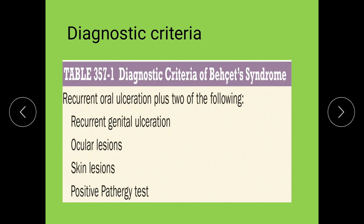The diagnostic criteria require the presence of recurrent oral ulcers — recurrent oral ulcers are a must — plus two of the following: recurrent genital ulcers (these genital ulcers will not involve the glans or urethra, only the scrotum or vulva are involved), ocular lesions, skin lesions, and positive pathergy. Pathergy is an inflammatory reaction in the skin produced by scratching or intradermal injection of saline.